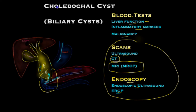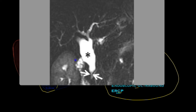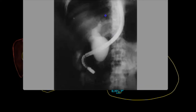Now let's look at some pictures. This MRI scan shows the bile tube, which is normal up in the liver, but down here you can see a cystic dilatation. This is the pancreatic duct, and this is the abnormal communication shown clearly on this scan. This picture obtained by ERCP shows a very similar appearance as the MRCP, with a cystic dilatation.